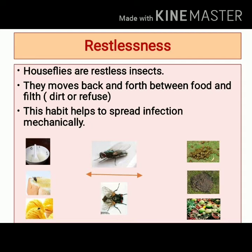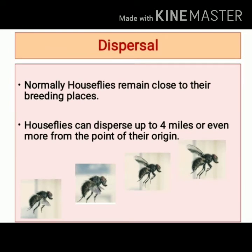Restlessness: Houseflies are restless insects. They move back and forth between food and filth — filth being dirt or refuse. This habit of restlessness helps houseflies spread infection mechanically. Dispersal: Normally houseflies remain close to their breeding places, but they can disperse up to 4 miles or even more from the point of their origin.